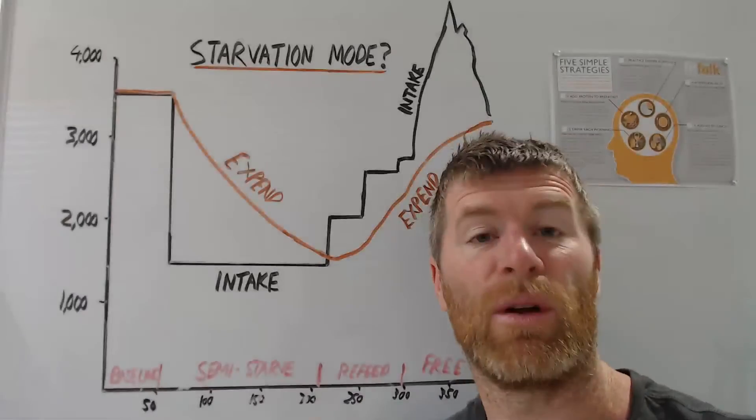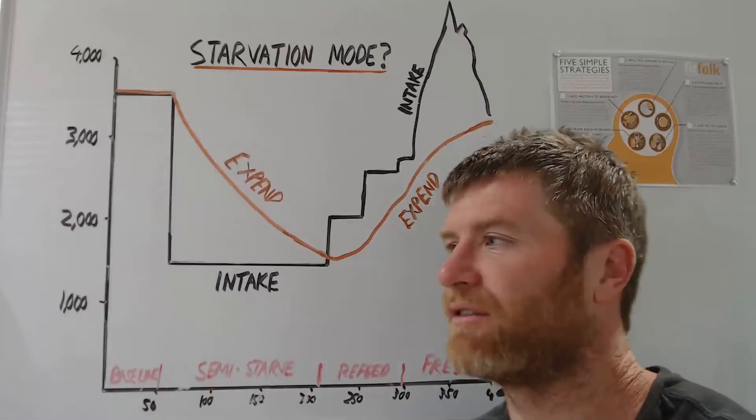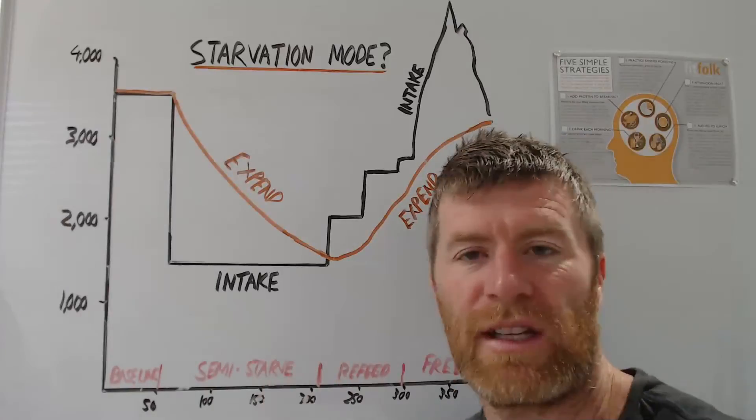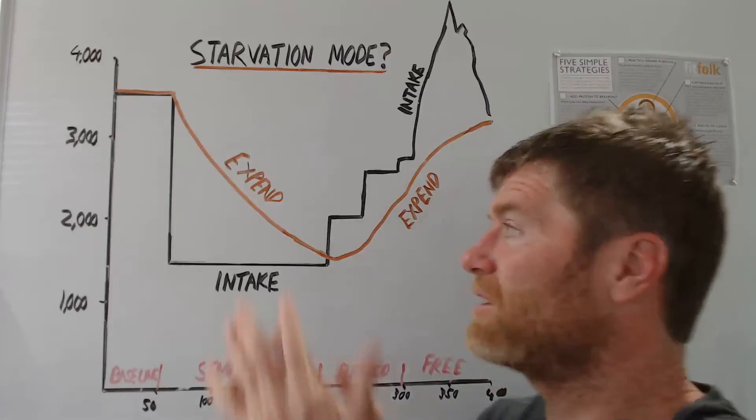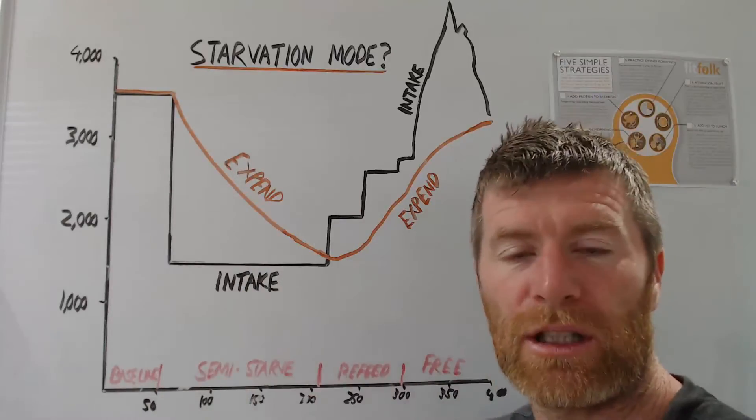So what happened was in response to being semi-starved, these are guys going from lean, so from 15% body fat down to 5.5% body fat. So this is the craziest reduction in metabolic rate.